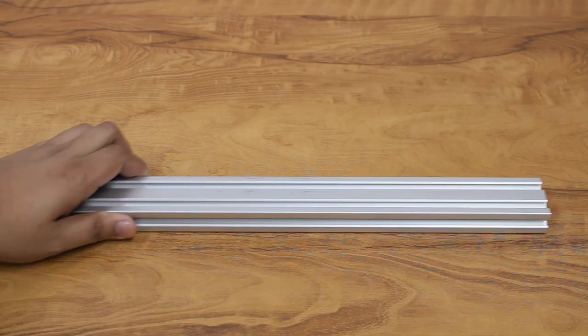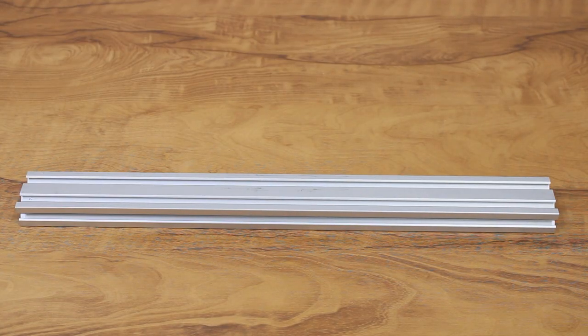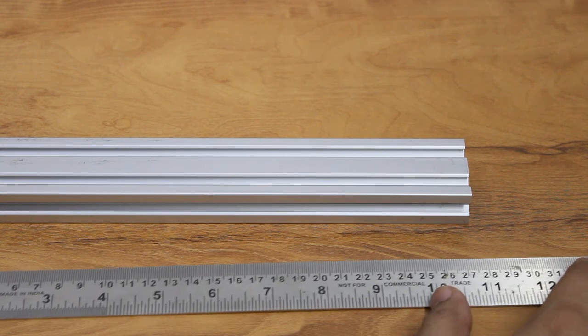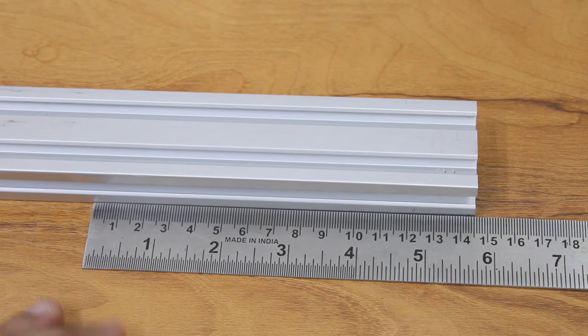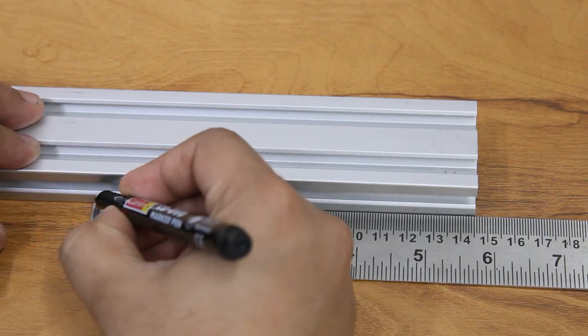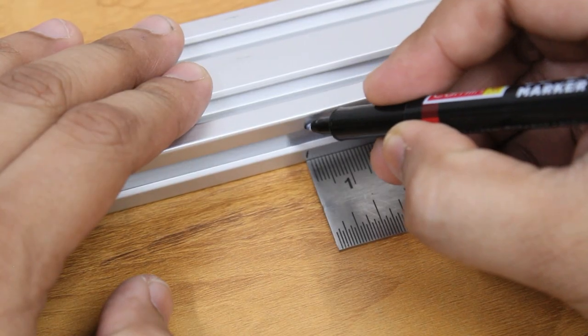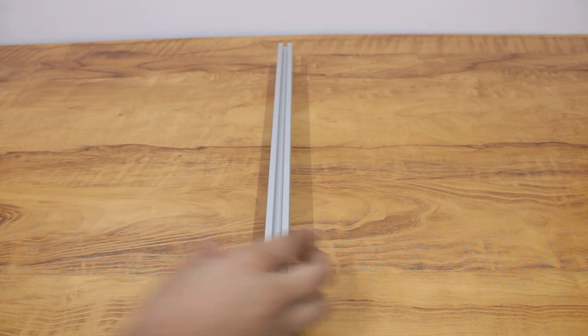Take one 400 mm 2040 profile and mark it at 145 mm from the end. This is the length up to which we will attach our 150 mm profiles.